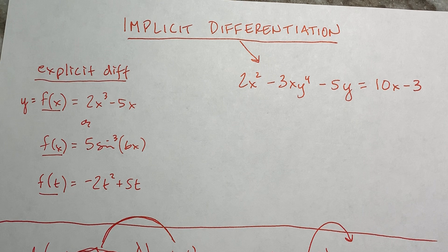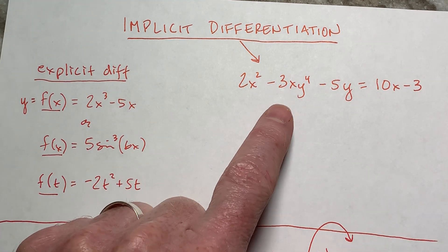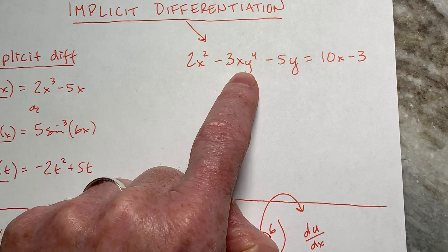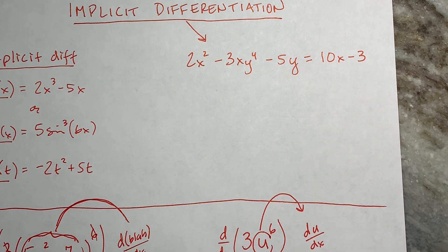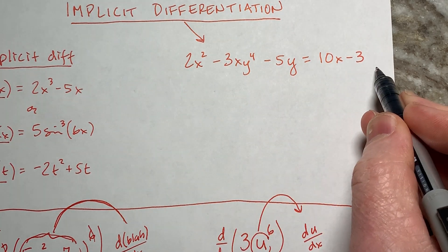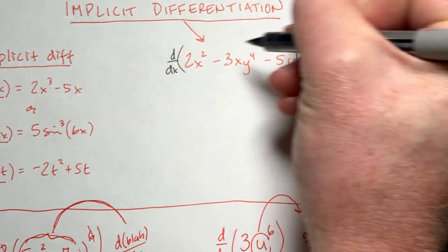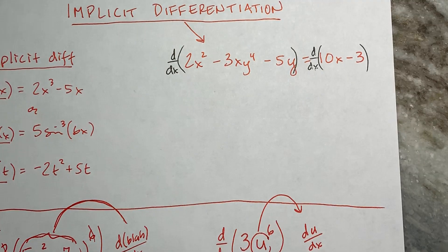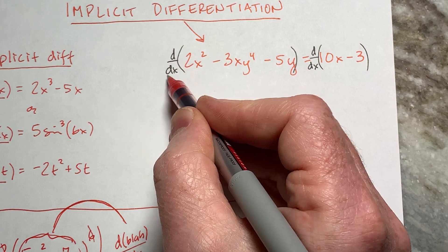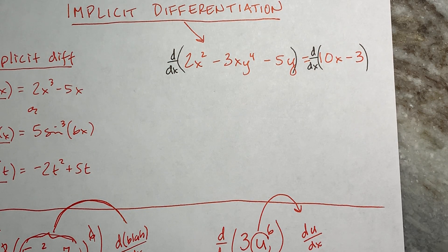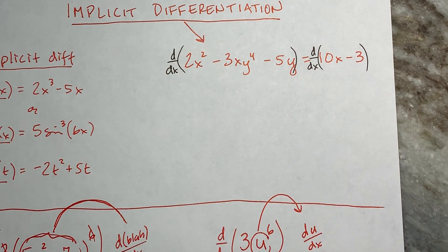I want to run through a few practice problems. Then I'm going to go to the worksheet on page 101. So the first example is 2X squared minus 3X times Y to the 4th minus 5Y equals 10X minus 3. The first thing I'm going to do to take the derivative is DDX both sides. Some people don't like writing that, but I like to write it. Notice I'm doing it with respect to X. You may ask how do I know what to differentiate with respect to — for now, do it with respect to X.